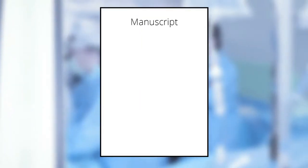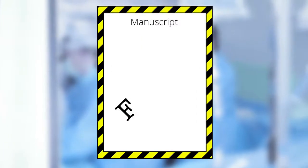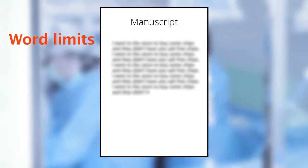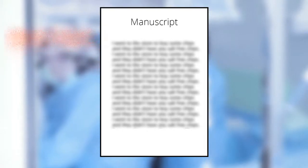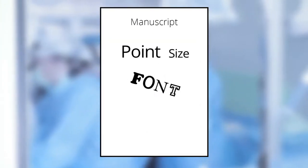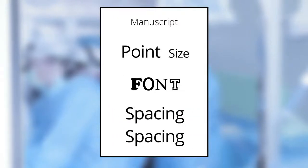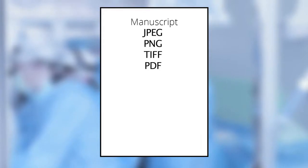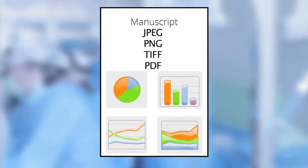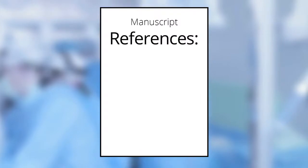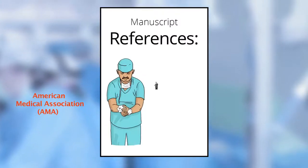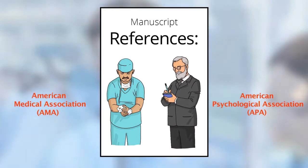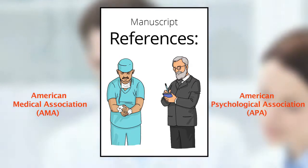It's customary for journals to provide authors with guidelines for formatting their manuscripts. For example, journals will often have strict word limits for abstracts and your entire document, requirements related to the point size, font, and spacing of text, guidance on headings and subheadings within the body of the manuscript, as well as permissible file types for tables and graphs, and a required style for listing your references such as that of the American Medical Association or the American Psychological Association. This is not an exhaustive list but it does give you some idea about the guidelines of a typical journal.